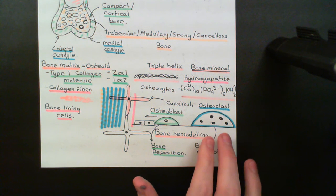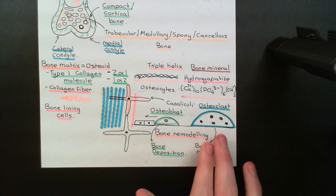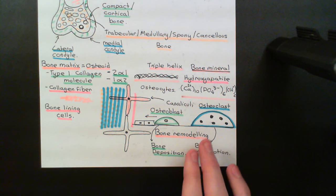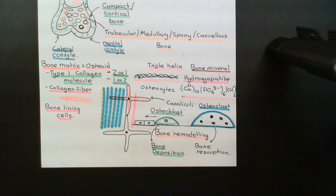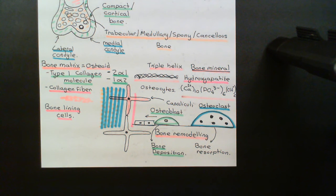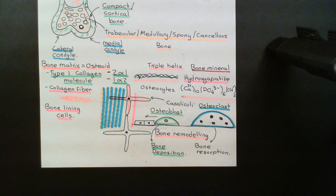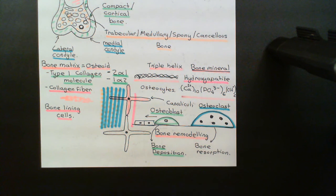Osteoclasts do the exact opposite — they release acid molecules, a very high concentration of protons, to break down the ionic crystal. Releasing a high free proton concentration onto an ionic crystal has the tendency to break it apart. So osteoclasts release acid onto the bone to break the hydroxyapatite apart. They also release enzymes which break down the osteoid proteins — breaking down the collagen fibres and therefore the osteoid.